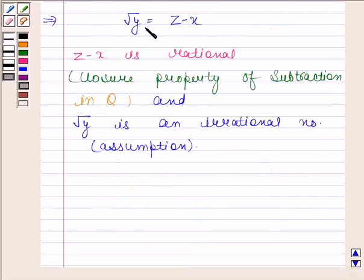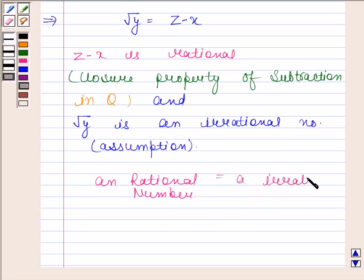So, √y equals z minus x means that a rational number is equal to an irrational number, which is not possible.